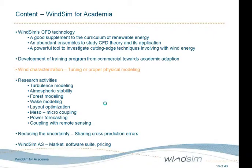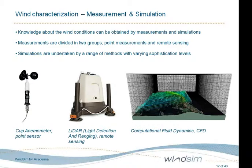On wind characterization — tuning or proper physical modeling. There are only two ways to get knowledge about wind: measure or simulate. When it comes to measurements, we can broadly divide into two groups: point sensors like the cup anemometer, and remote sensing devices which give us much more information but also have higher uncertainties. For simulations, a wide range of methods are used as Xuan described. CFD is towards the higher end when it comes to sophistication level.